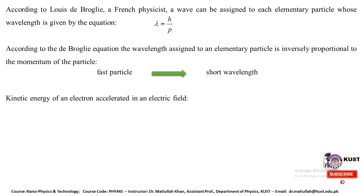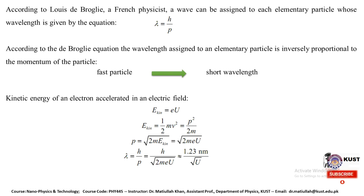Why do we use electrons in electron microscopes? In optical microscopy, the resolution limit was due to the wavelength of light. Instead of electromagnetic radiation, particles — specifically electrons — are used. From de Broglie's well-known hypothesis of the dual nature of matter, a wave is associated with each moving particle. The wavelength associated with a particle in motion is λ = h/p, where h is Planck's constant. This depends on the mass and velocity of the object.